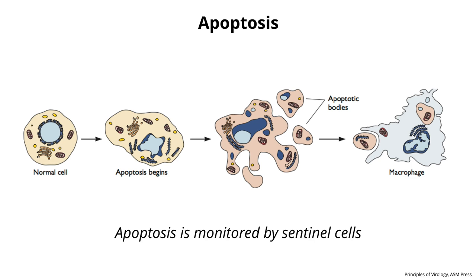Another intrinsic defense is apoptosis—programmed cell death. A virus-infected cell will trigger various signals that cause the cell to die. The nucleus starts to bleb, pieces of cytoplasm come off as apoptotic bodies, and eventually the cell dies. It's a program within our genome to kill ourselves: if a virus infects a cell, this program is turned on, the cell dies, and the virus can't replicate. The apoptotic bodies that come off infected cells are picked up by macrophages and dendritic cells, which can sense viral proteins or nucleic acids in them and start making innate defenses.